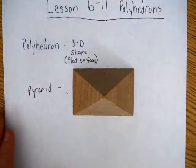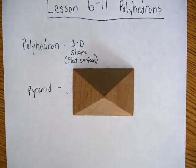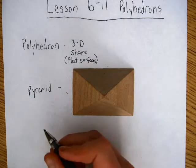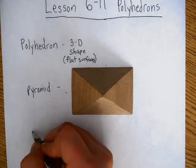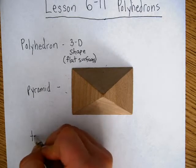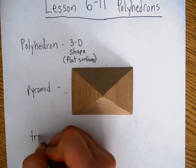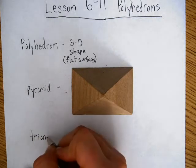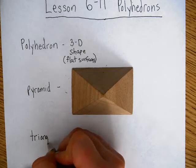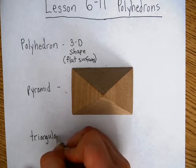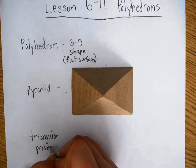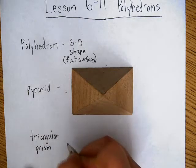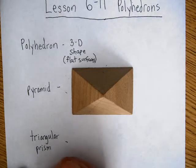The next vocabulary word is prism. We have a triangular prism and a rectangular prism.